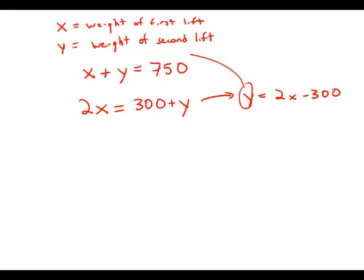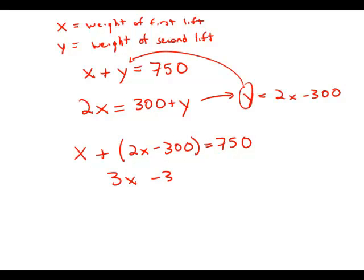I'm going to take this expression for y and substitute it into the first equation. So I get x plus, the expression that y equals, which is 2x minus 300, equals 750. Well, 2x plus x is 3x minus 300 equals 750. Add 300 to both sides, and we get 3x equals 1050.